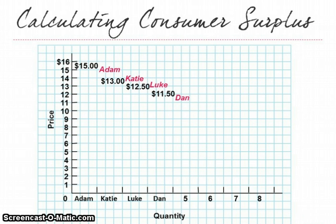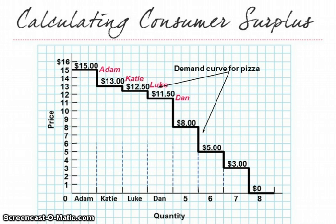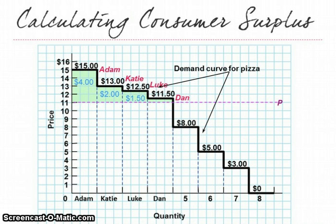Here again we're listing the amount that each individual is willing to pay for pizza — Adam, Katie, Luke, and Dan — and then there are some other people willing to pay prices less than the market price, so they don't factor in. That actually gives us our demand curve for pizza. With the price at eleven dollars, the area below the demand curve and above the price is the area of consumer surplus — the light green section on the graph.